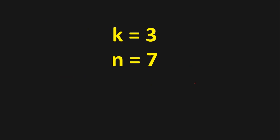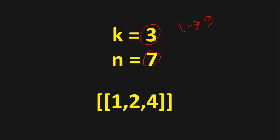Suppose you are given k equals 3 and n equals 7. k equals 3 means you have to choose three numbers from 1 to 9 that add up to 7. Here we have only one combination: 1, 2, 4 — and that adds up to 7.